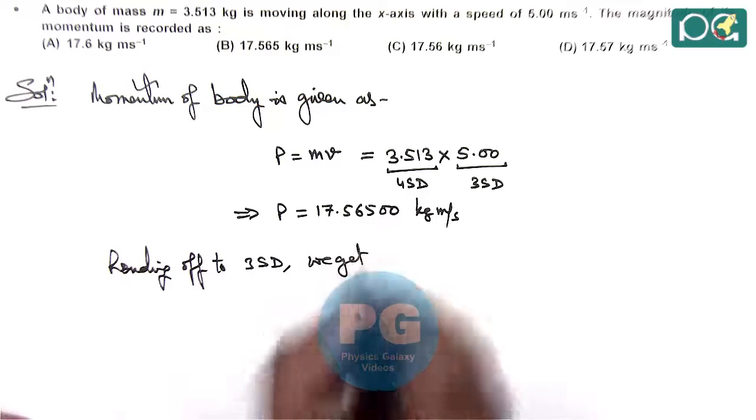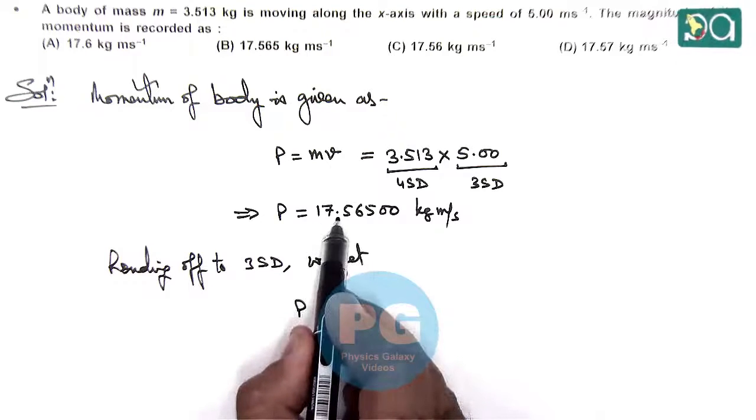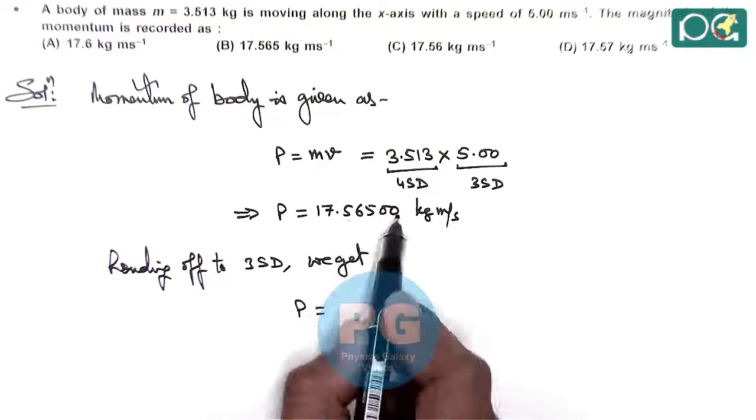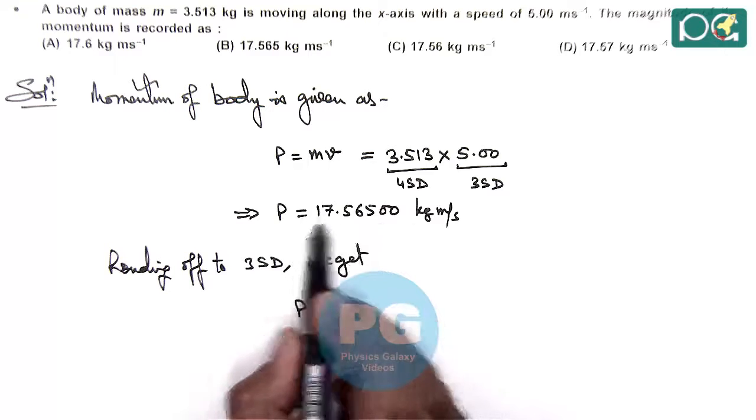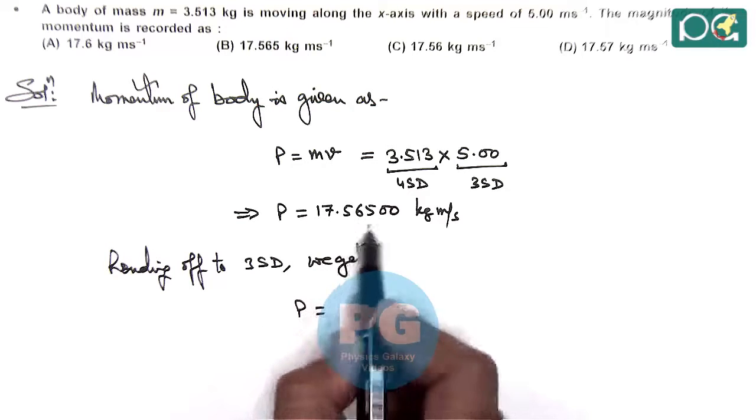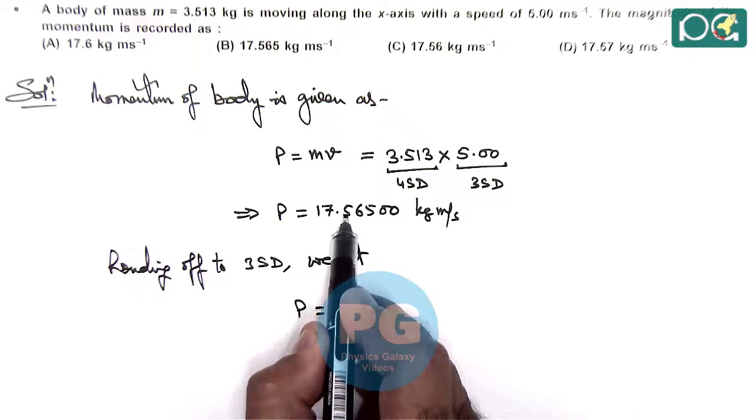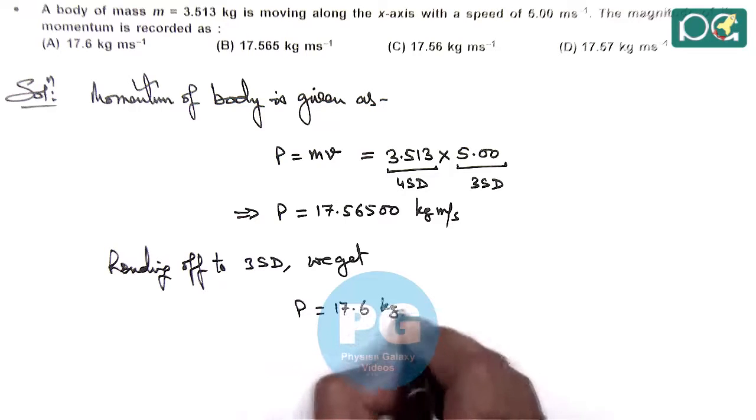Here we get the value of momentum. We'll choose up to 1 significant digit after decimal. So we'll round off 17.56500 to 17.56. Further when we round off, it'll give us the higher value of 5. Next, tens place, here it gives 17.6 kg meter per second.